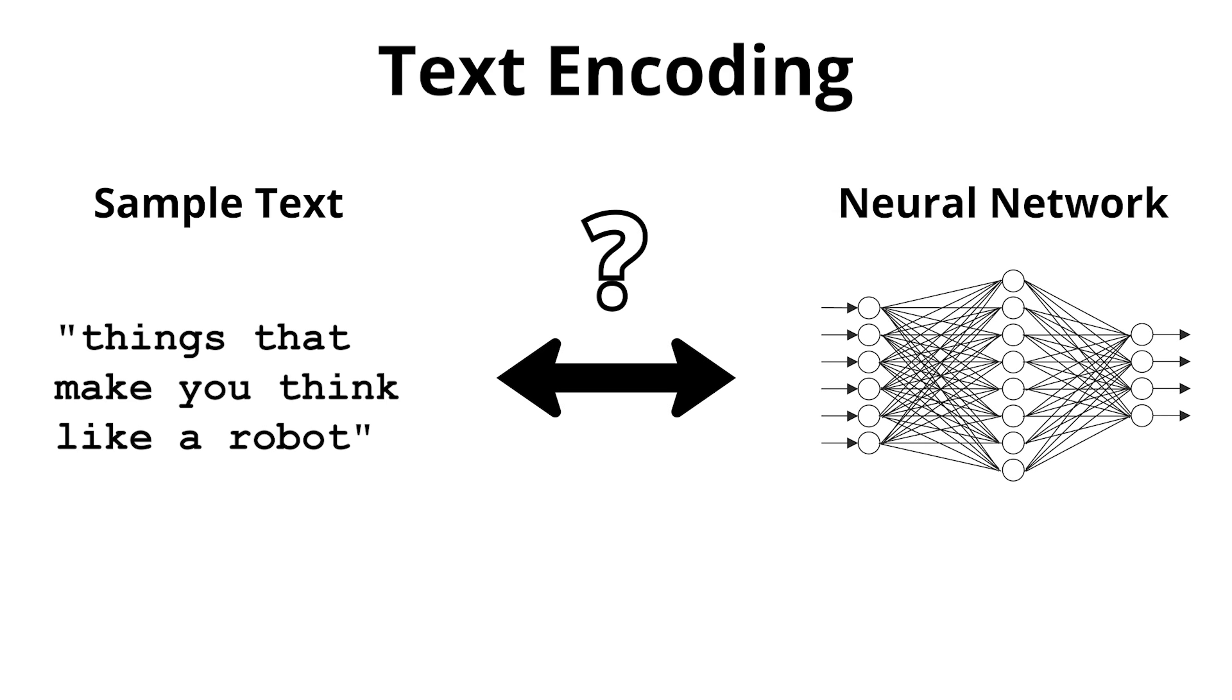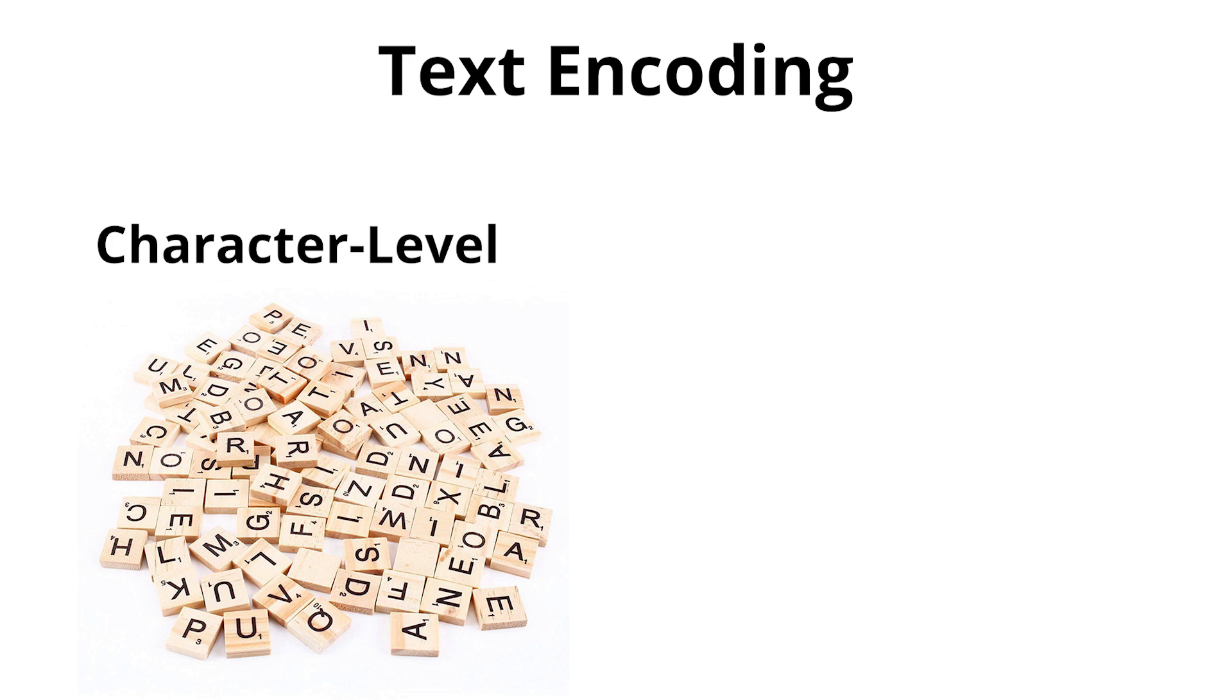One of the things they did was to use a creative solution to the encoding problem. You see, there's typically two obvious ways to encode text for a neural network, either at the character level, or at the word level.